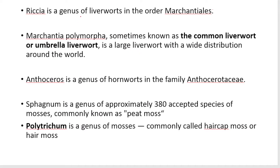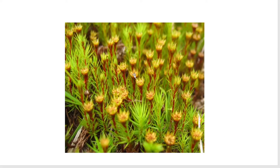Riccia is a genus of liverworts. Marchantia polymorpha is sometimes called the common liverwort or umbrella liverwort. Anthoceros is a genus of hornworts. Sphagnum is also called peat moss. Polytrichum is a genus of mosses commonly called hair cap moss.